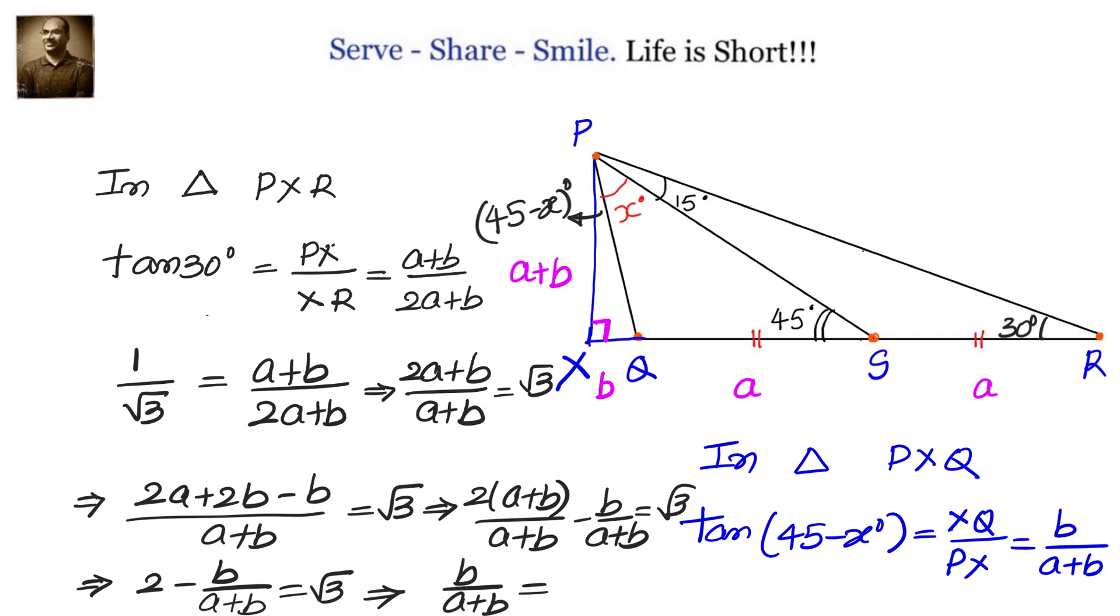But we know B by A plus B is tan of 45 minus X. Now tan of which angle will give us 15 degrees? So we know B by A plus B equals 2 minus root 3 and that equals tan of 45 minus X. But 2 minus root 3 is tan of 15 degrees.